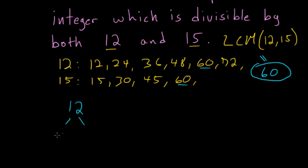So 12 is just 3 times 4, and 4 is just 2 times 2. 15 is just 3 times 5, and these are both prime. And what we're looking for is factors that they share in common. Notice that they each share a 3.